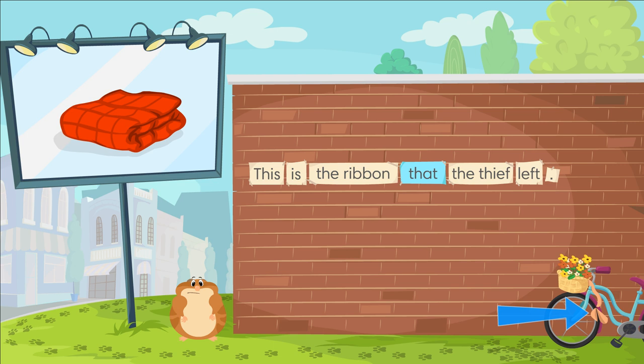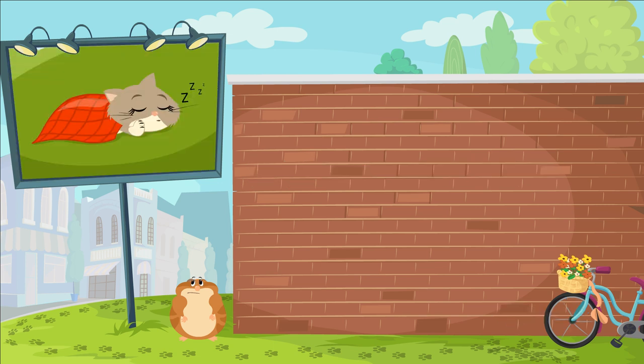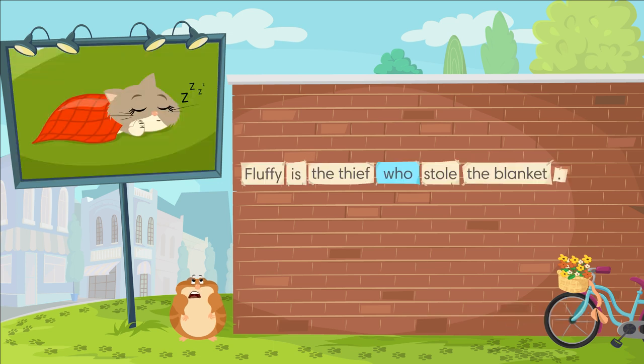Whose ribbon is it? Who's the thief? Oh, it's Fluffy's ribbon. Fluffy is the thief who stole the blanket.